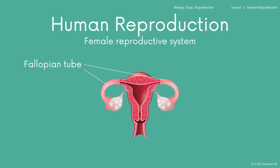We'll start with the fallopian tubes. You'll see that there are two. It's important to say that there may be some differences between people, because not everyone develops two fallopian tubes, for example, and not everyone develops exactly the same number of eggs. So this is just a diagram to give you a representation. The fallopian tube is also known as the oviduct — it links the ovary to the uterus, and it is where fertilisation of the egg takes place.